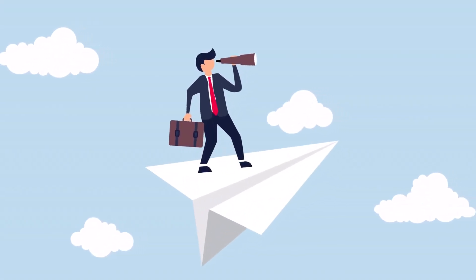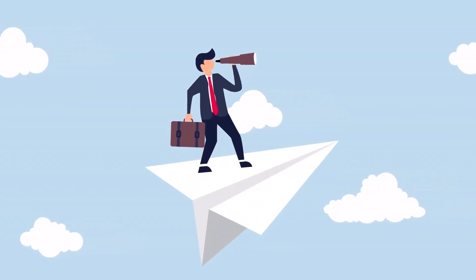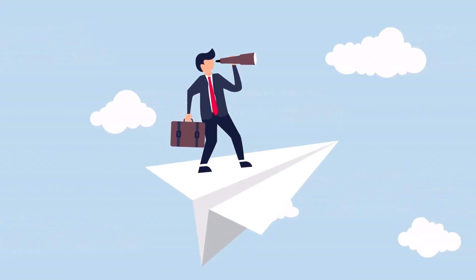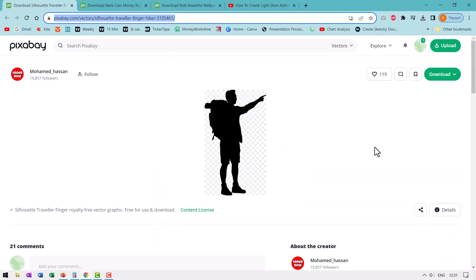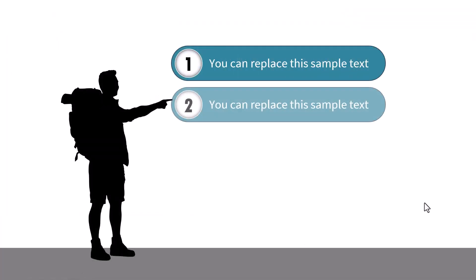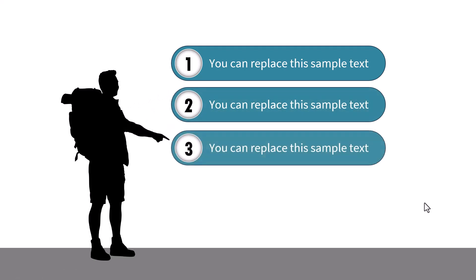Hi, today I'll teach you a trick that will open up a whole world of opportunities for you. I'll show you how to pick up a static SVG image from sites like pixabay.com and make it into an animated image like this, and ensure that the image moves so it really attracts the viewer's attention.